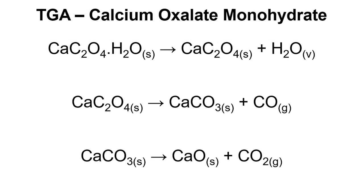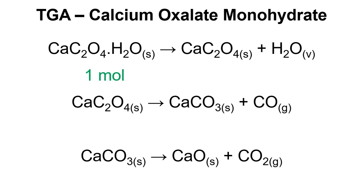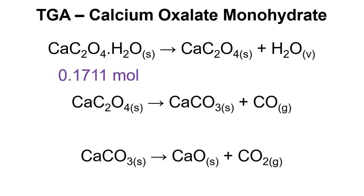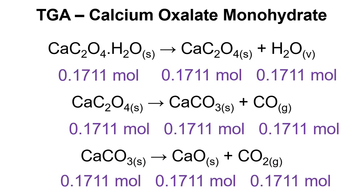All of these reactions are one-to-one in the stoichiometry, so if we have one mole of the starting material we'll have one mole of everything else being produced as we heat up and decompose that material. So if we have 0.1711 moles, we'll end up with 0.1711 moles of everything being produced.